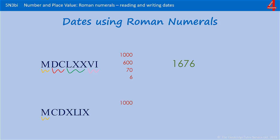This one's a little bit more tricky. Again we have 1000. Next we have 100, but look at the numeral after that — that's bigger than 100, that's 500. So that must mean it's 100 less than 500 — CD is 400. Next we have a 10, but notice that 10 is in front of an L, and that L is worth more, so that is 10 less than 50 — that's 40. We have an I followed by an X, which is 1 less than 10, so that's 9. The date is 1449.